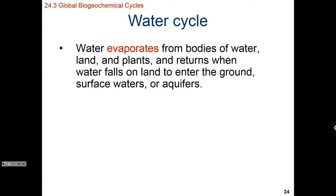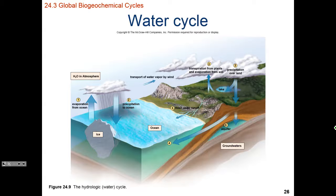Let's talk about the water cycle — the single most important cycle on our planet. Our water cycle involves taking water from our exchange pools to our storage pools. We find that we can take water from the liquid form and evaporate it up into the atmosphere, and from there it can then precipitate back down to Earth. We'll have evaporation from the ocean, evaporation from the land, and with a glacier you could also show sublimation.